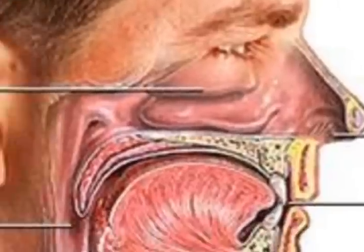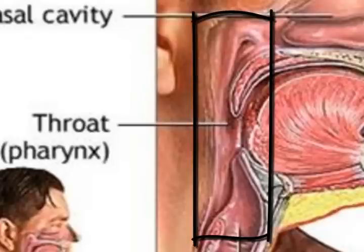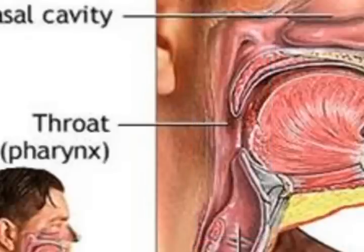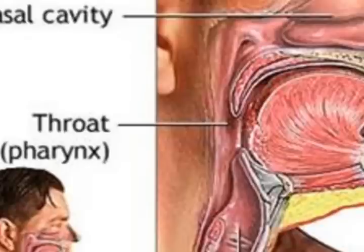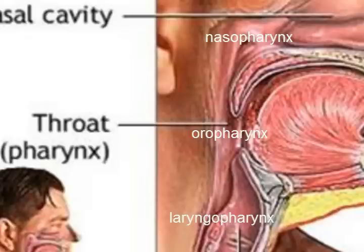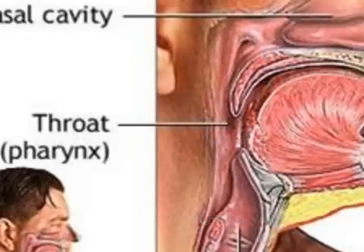The pharynx is what we commonly call the throat. The pharynx is part of both the digestive and the respiratory system, and it's divided into three separate regions. It extends from the back of the nasal cavity all the way down to the top of the voice box. The part posterior to the nasal cavity is the nasopharynx. The part posterior to the oral cavity is the oropharynx. The part just above the larynx is the laryngopharynx. So when you look in your patient's throat and see the little uvula — the little hanging-down thing — you're seeing the oropharynx.